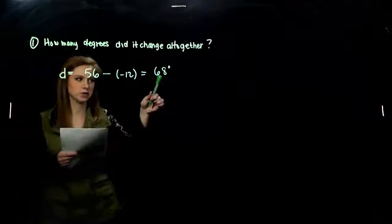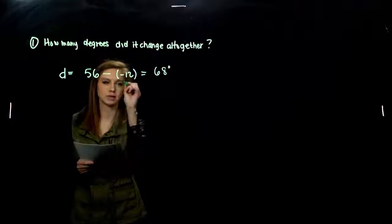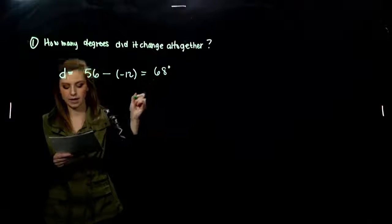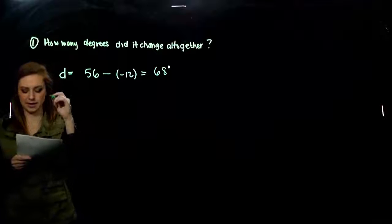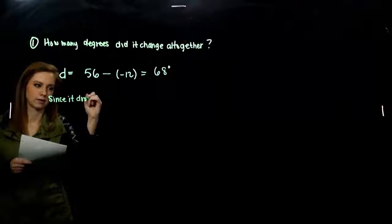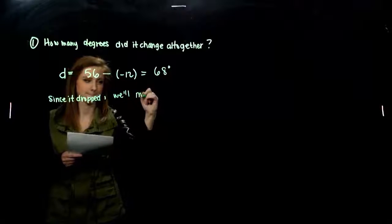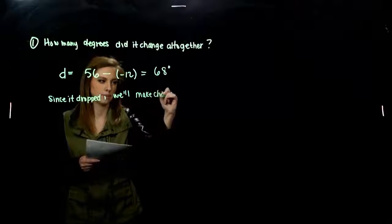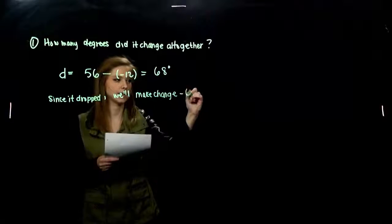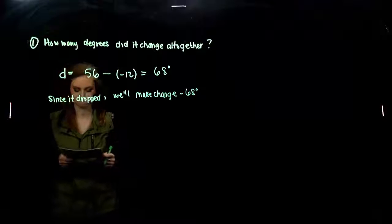But was it increasing or was it decreasing? It was decreasing, because we went from a positive to a negative. So I'm going to go ahead and make that a negative 68 degrees. Since it dropped, we'll make the change a negative 68 degrees.